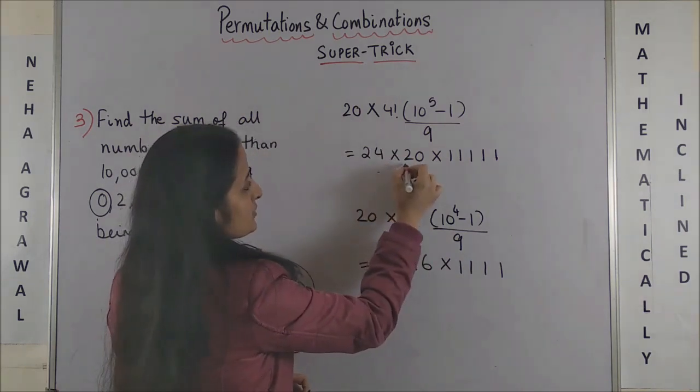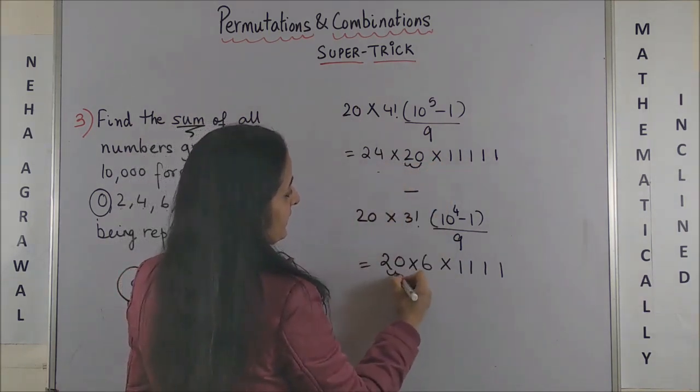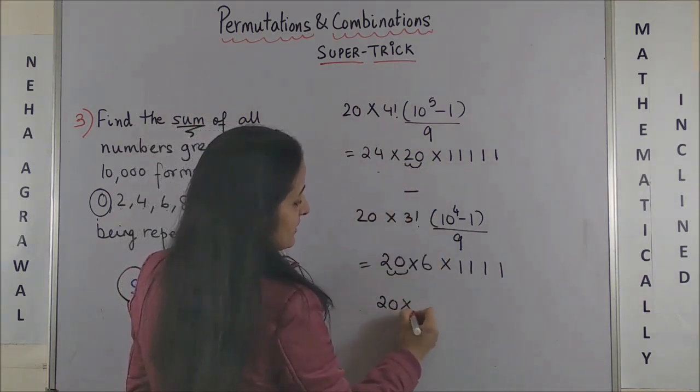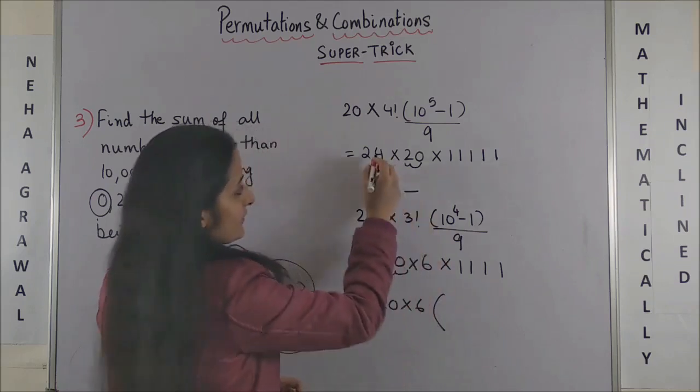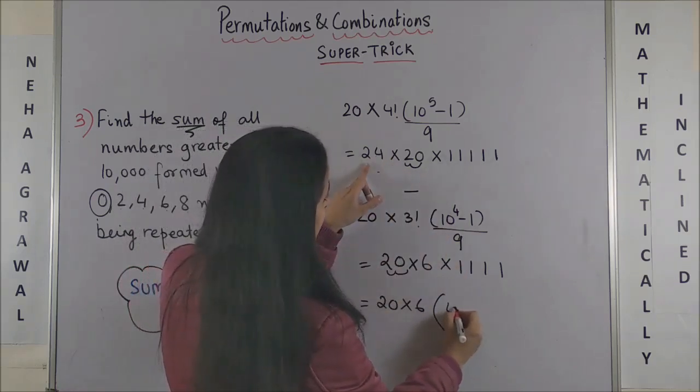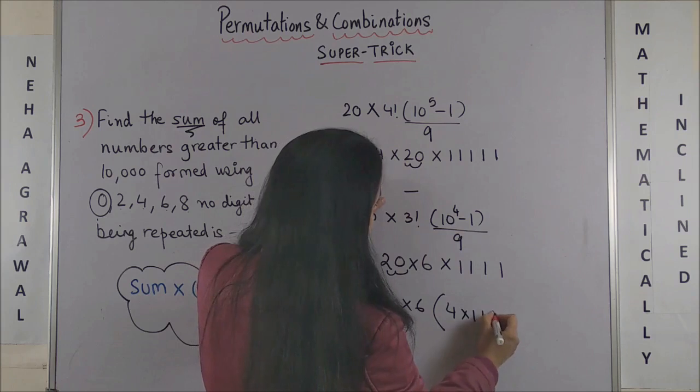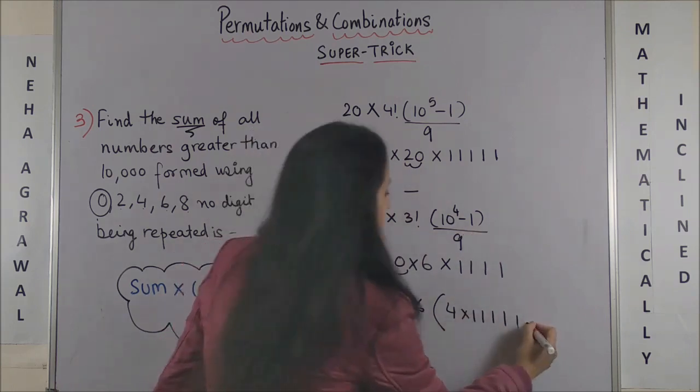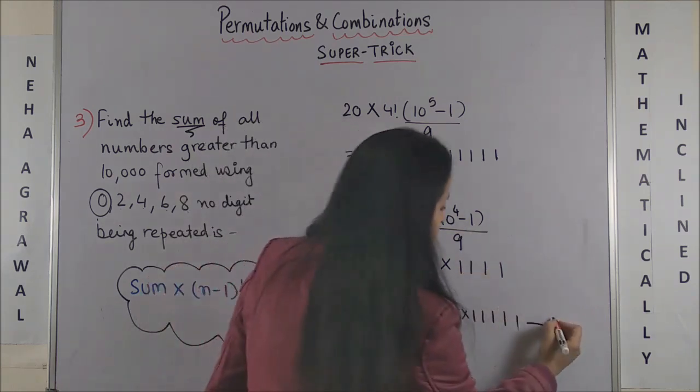So from these two, if I take 20 and 6 common, then inside we are left with 4 into 11,111 minus 1,111.